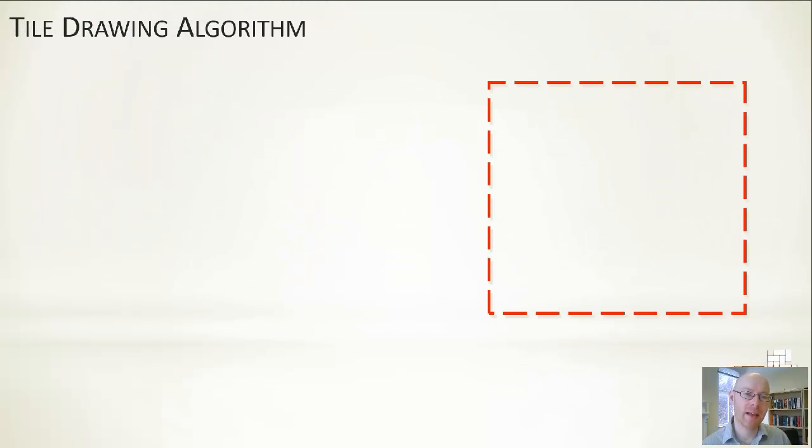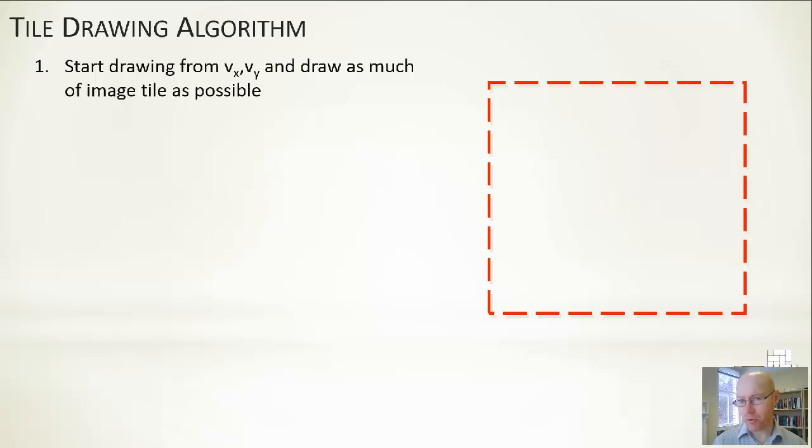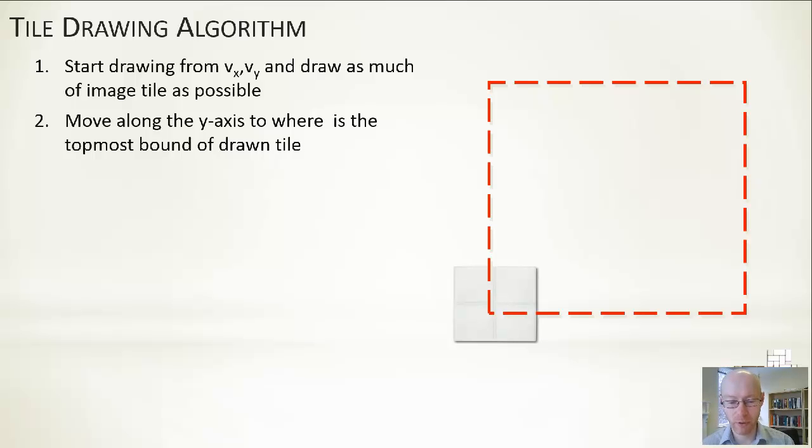By way of a wordy expression as to how we would do this: we've got our image, we know that VX, VY is whereabouts the viewport starts relative to that image. The first thing we should do is draw out that bit of the image into our viewport. That's our starting point. Start drawing from VX, VY and draw as much of the image as we possibly can. If we have an example down here where VX, VY is there, not too far off the center, we draw this particular region down in the bottom left-hand side.